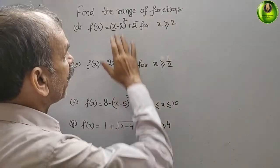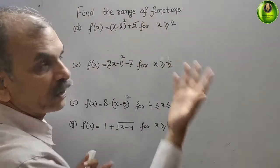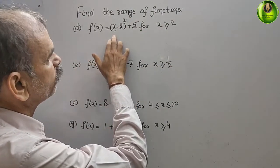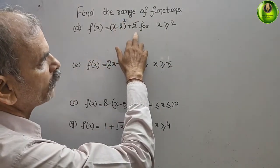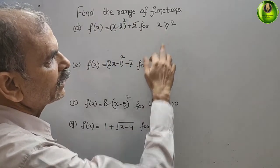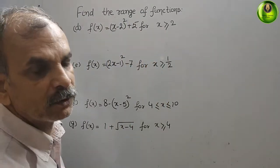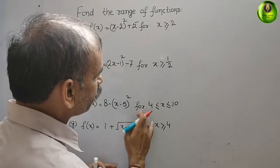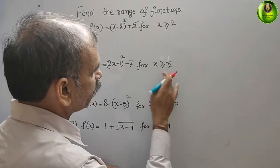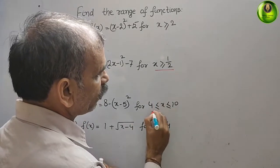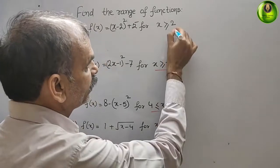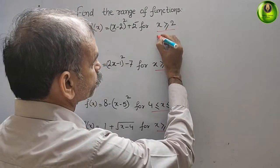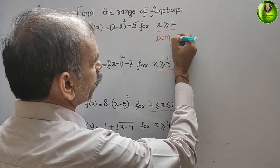The question is to find the range of functions. They have given f(x) = (x-2)² + 5, for x ≥ 2. First thing we should know: whatever value or range for x is given, that is your domain.